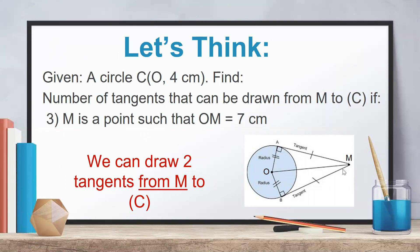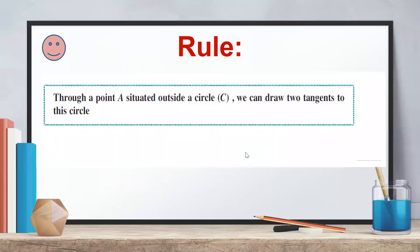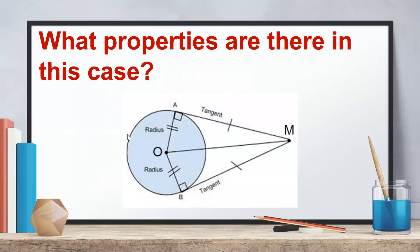From a point outside a circle we can draw two tangents to the same circle, and these two tangents are equal. As a rule: through a point A situated outside a circle C, we can draw two tangents to the circle and these two tangents are equal. In this case, MA = MB, so M belongs to the perpendicular bisector of AB. Also OA = OB, so O belongs to the perpendicular bisector of AB. Therefore OM is the perpendicular bisector of AB and the axis of symmetry of the figure formed by the two tangents and the two radii.